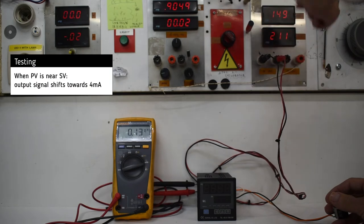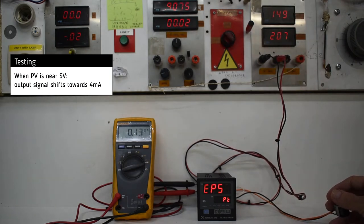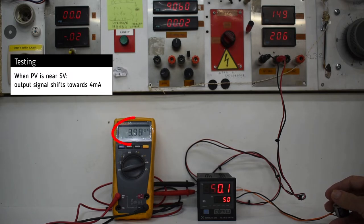As we near the set point by manipulating the input signal with a potentiometer, the mA output can be seen on the multimeter screen, and it's 4 mA.